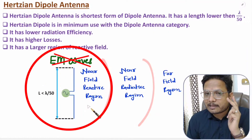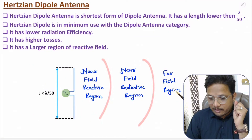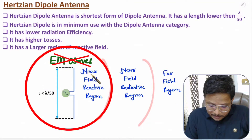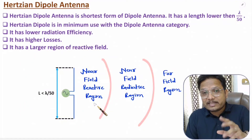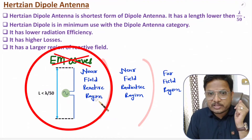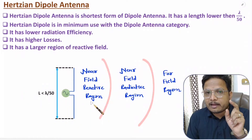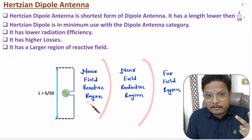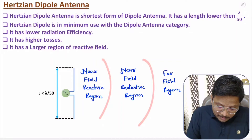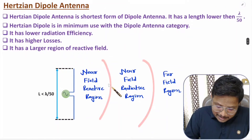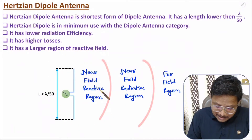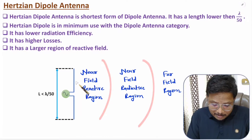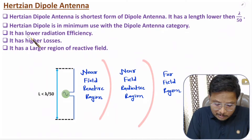Electromagnetic waves are present in the far-field region only, and propagation of electromagnetic waves occurs in the far-field region. So the near-field reactive region is an unwanted region, because it has maximum inductive components, which causes maximum coupling with other RF circuits. With the Hertzian dipole antenna, this near-field reactive region is larger, which produces higher losses. It also has lower radiation resistance, because of which it has lower radiation efficiency.